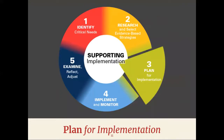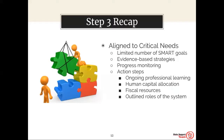Step three in the Ohio Improvement Process is the plan for implementation. At the DLT level, you will focus on the district-level plan. Your plan must be aligned to critical needs with a limited number of SMART goals and evidence-based strategies, a clear plan for monitoring progress, and action steps that will be implemented with fidelity. Additionally, the DLT will consider ongoing professional learning, human capital allocation, fiscal resources, and outlined roles of the system.